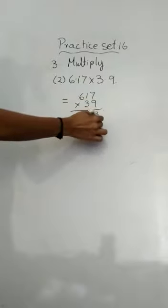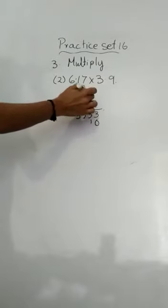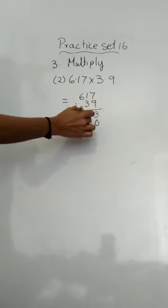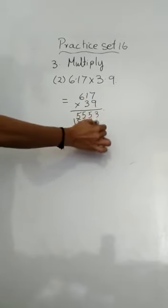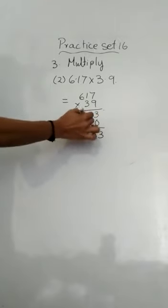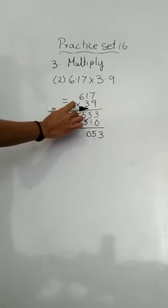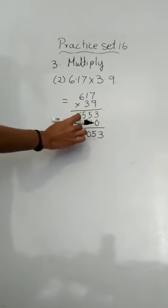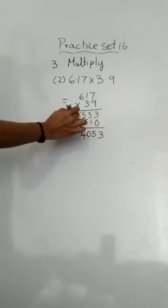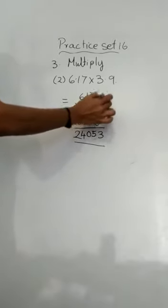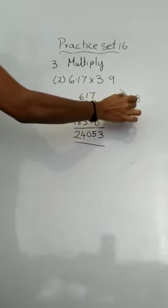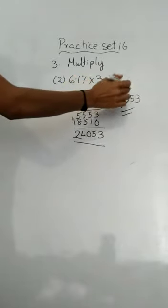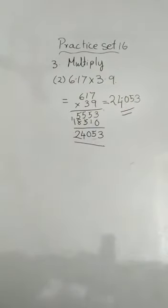Put a zero, then: 7 threes are 21, carry 2; 1 three is 3, plus 2 gives 5; 6 threes are 18. Adding: 55 plus 5 gives 10, carry 1; 1 plus 5 is 6; 6 plus 8 gives 40, carry 1 — you write 24063. How many decimal places? 2 here and 1 here means 3 decimal places total. So the answer is 24.063.